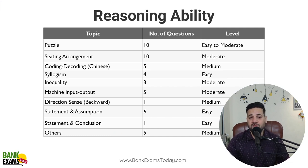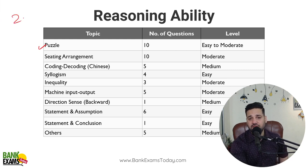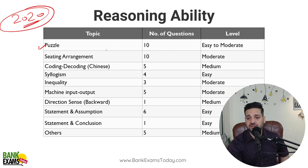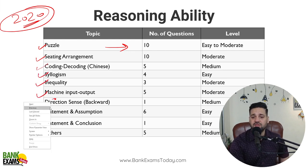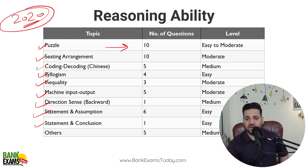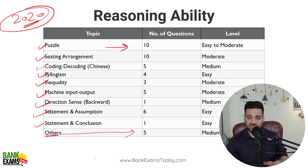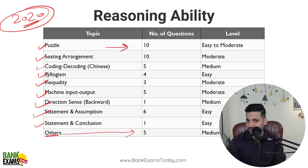In the Reasoning Ability section of the 2020 exam, there were puzzles — two puzzles, and an easy puzzle was there. Then seating arrangement, Chinese coding and decoding, syllogism, inequality, machine input-output, direction sense test, statement and conclusion, statement and assumptions, and some blood relation questions. This section was relatively tough in the 2020 exam as compared to other sections.